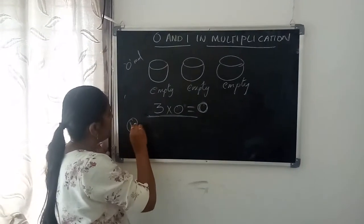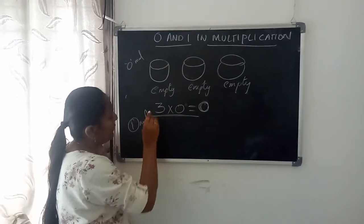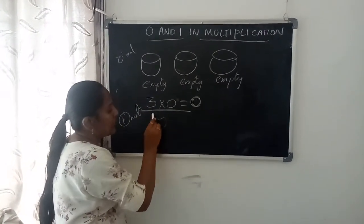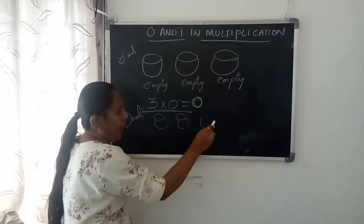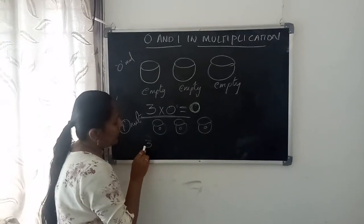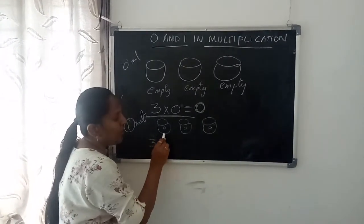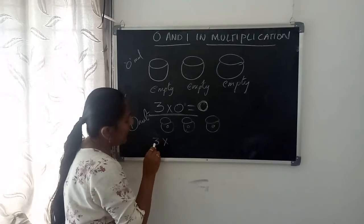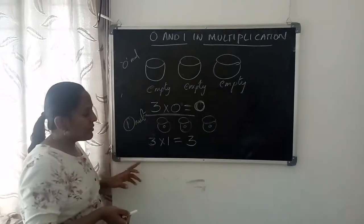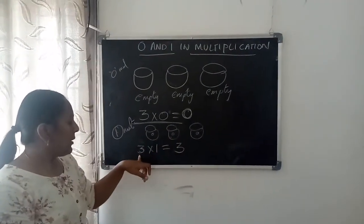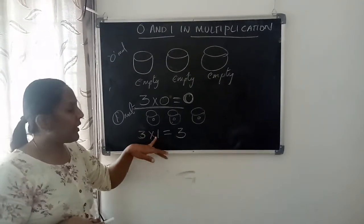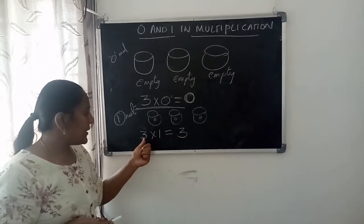And coming to one multiplication. If you multiply any number with one, the product will also be the same. Now suppose here again you have three balls, but one object in each ball. How will you do the multiplication? How many balls are there? Three balls. In each ball you have one. So three ones are three. What we understood by this? If you multiply any number with one, the product will also be the same number.